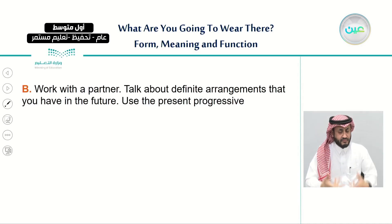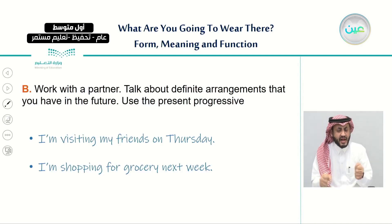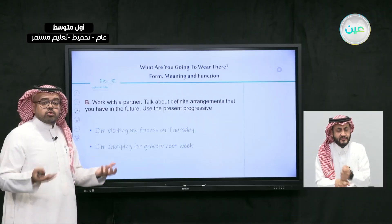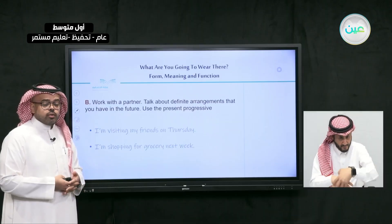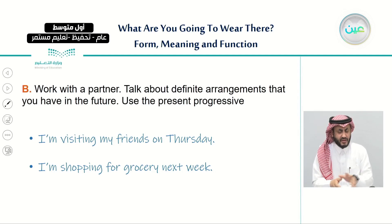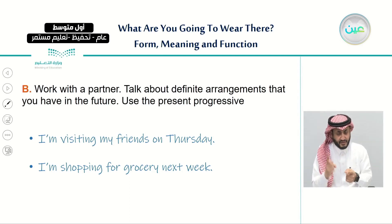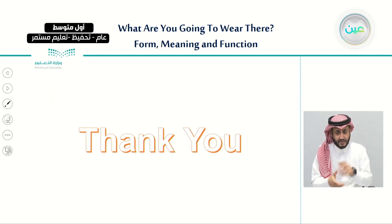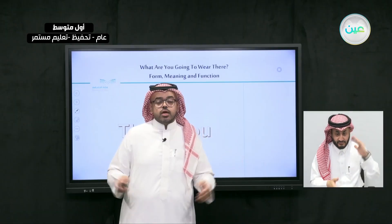Now, work with a partner and talk about definite arrangements you have in the future using the present progressive. Think of any arrangement that is definite. For example: I am visiting my friends on Thursday, or I am shopping for groceries next week. This is how we use the present progressive to talk about future arrangements. We have reached the end of our lesson — thank you very much for watching and I will see you next time.